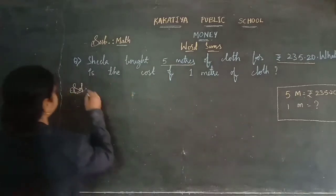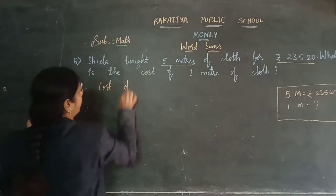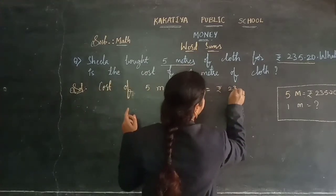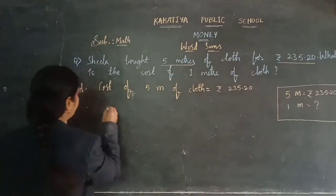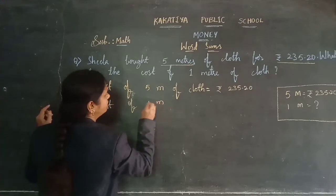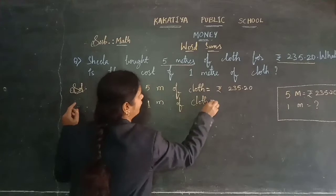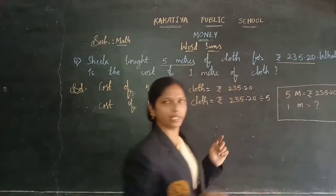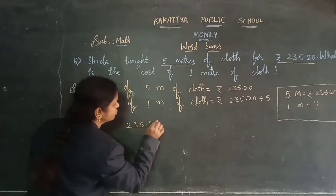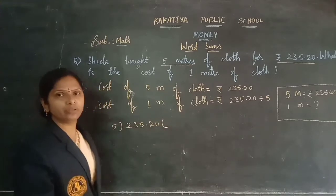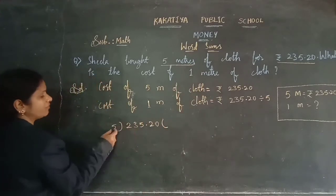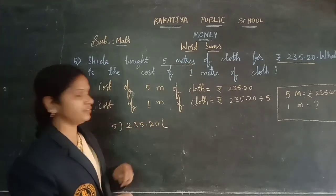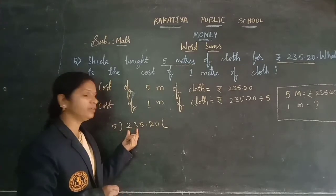Let's write the steps and do the solution. Cost of 5 meters of cloth is 235 rupees 20 paise. Cost of 1 meter of cloth: 235 rupees 20 paise divided by 5. Come on, let's do the division. How many digits do you need to divide here? When doing division, compare the first digit with the divisor 5 — the first digit 2 is smaller than 5, so take 2 digits which is 23. 23 is bigger than 5, so divide 23 by 5.